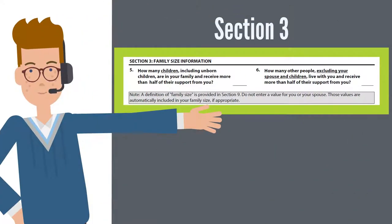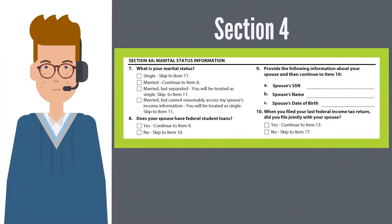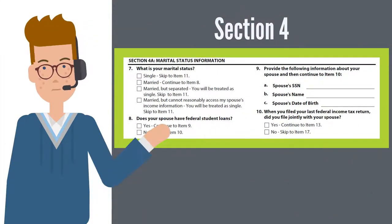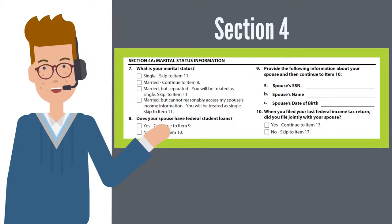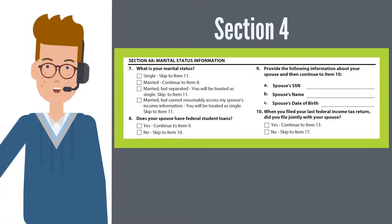Section 3 asks about your family size. Do not include yourself or your spouse in this section — they are automatically included in your family size if appropriate. Section 4 of the application first focuses on your marital status. It is extremely important to answer appropriately here and, based on your answers, follow the indicated path.